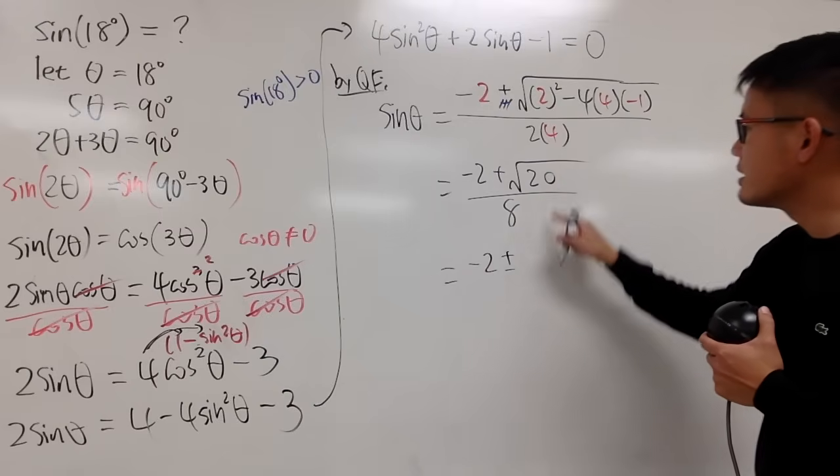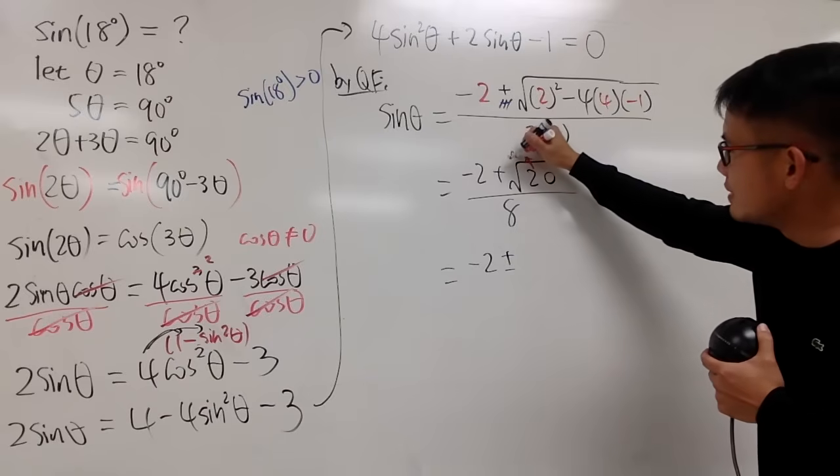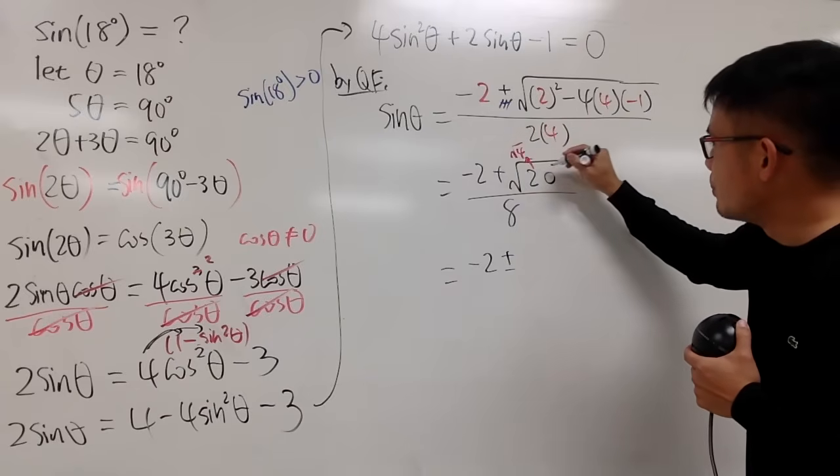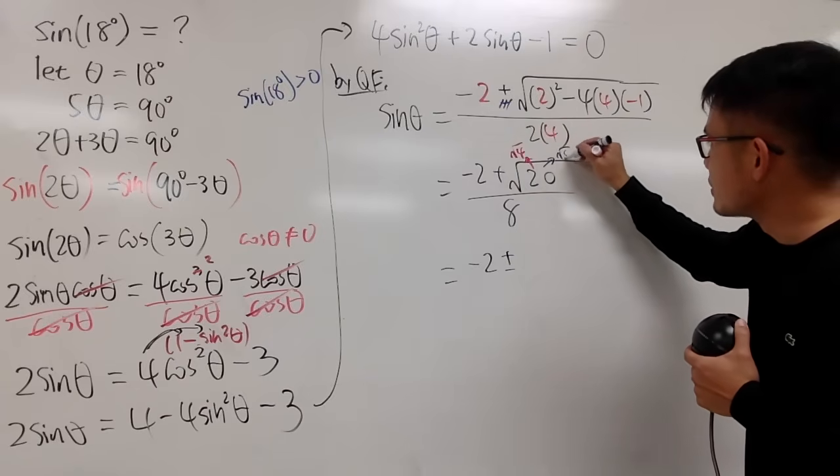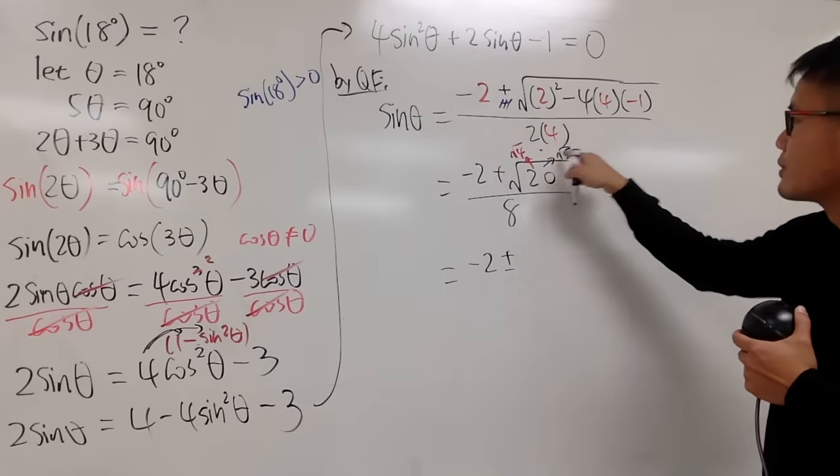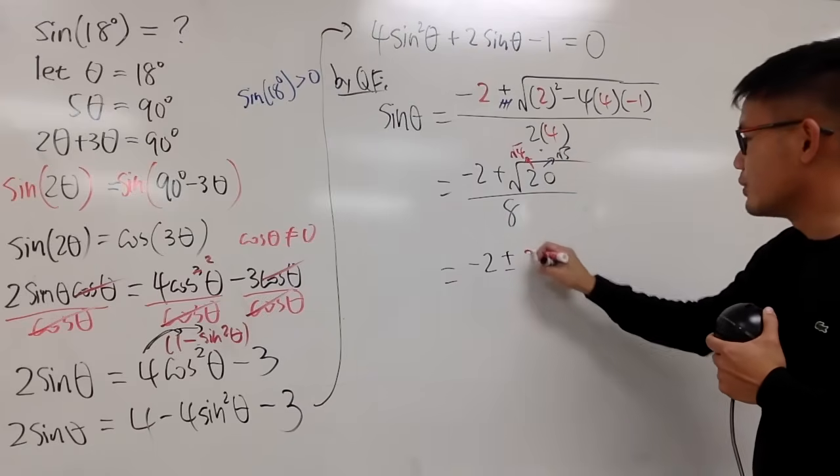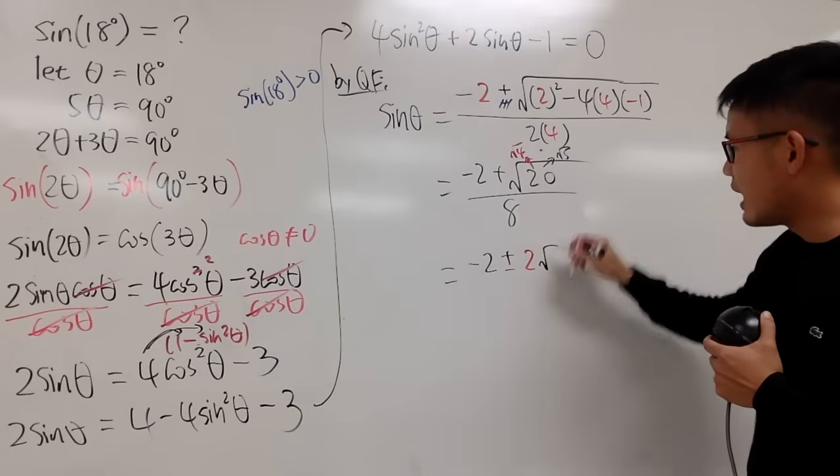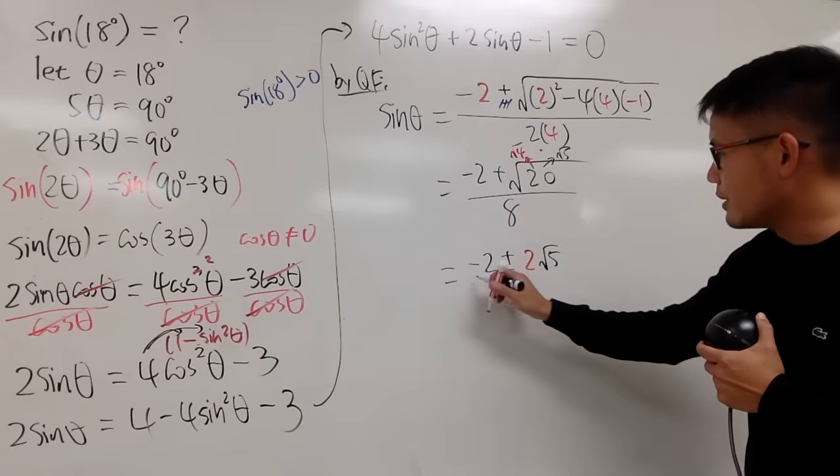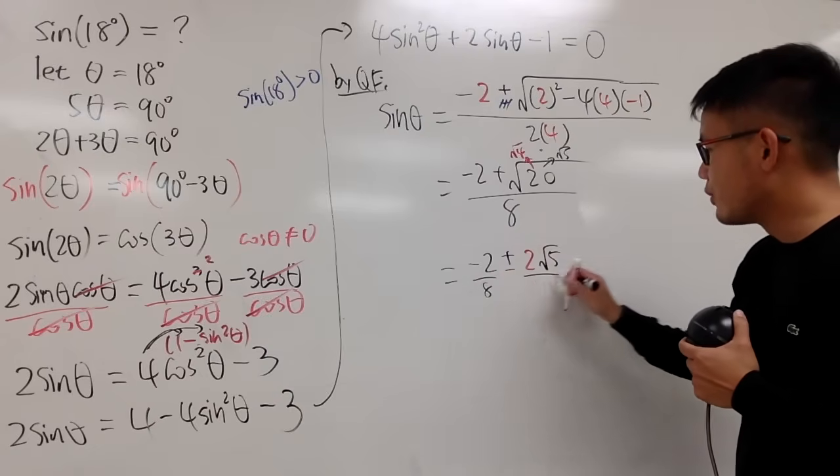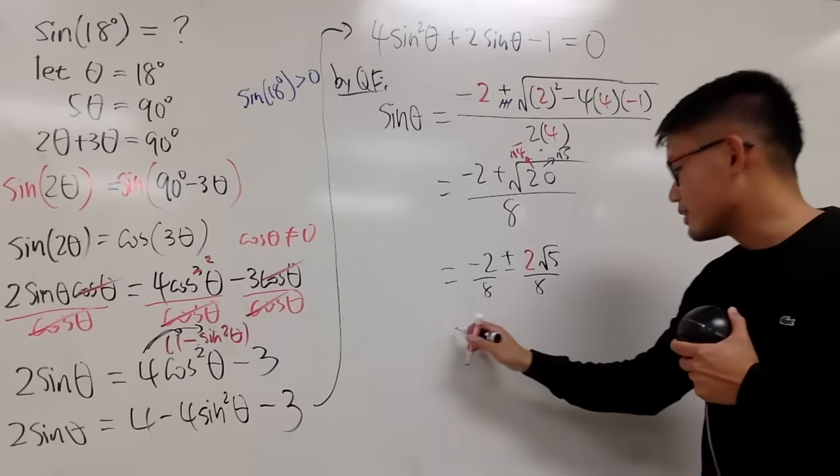And then, just do more math. This is negative 2 plus. Break this down. This is square root of 4 times square root of 5. This is just a regular 2. This is square root of 5 over 8. You can put this down over 8 here, over 8 here. It doesn't really matter. I know you guys can do it with this.